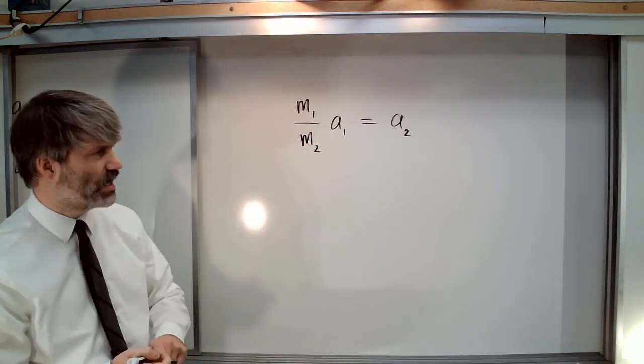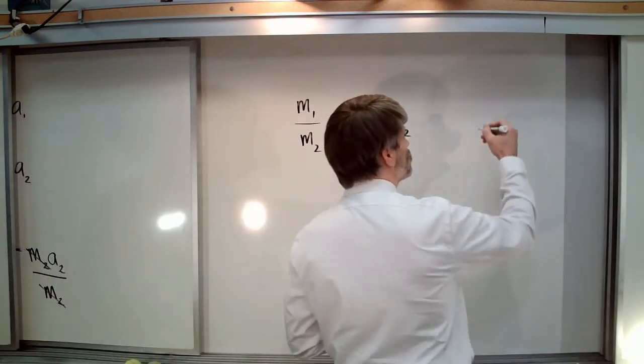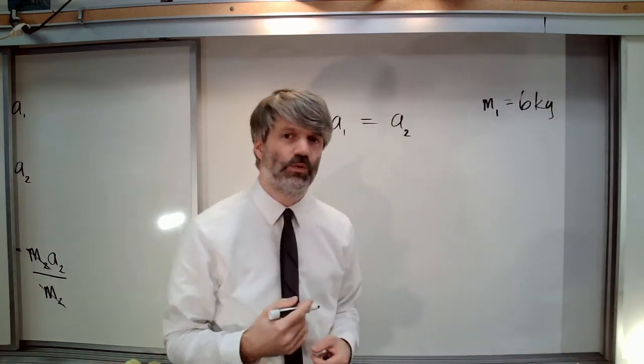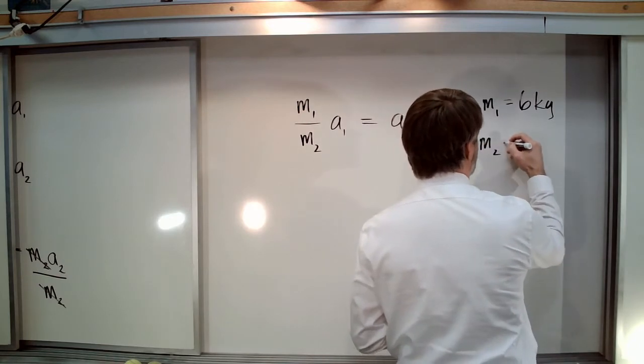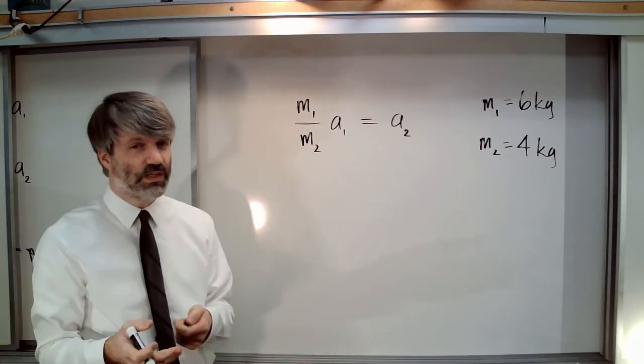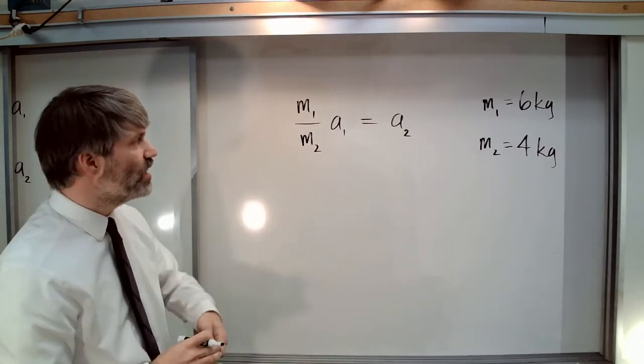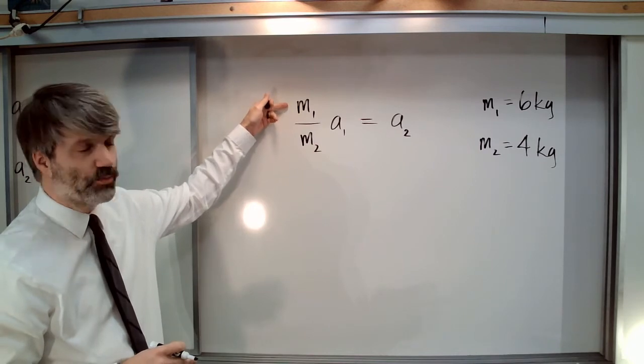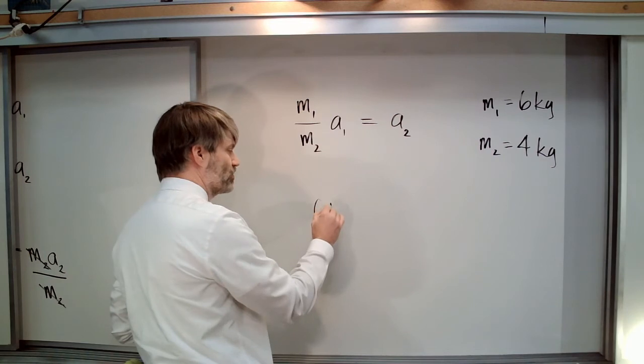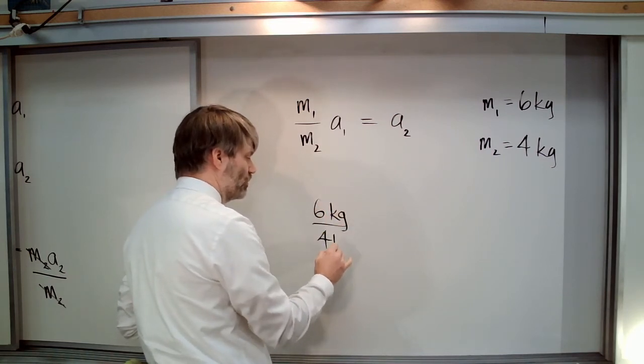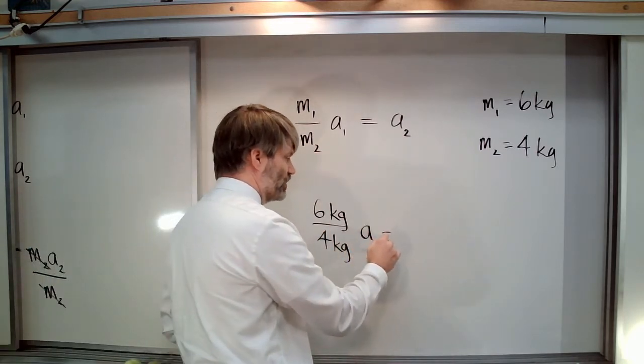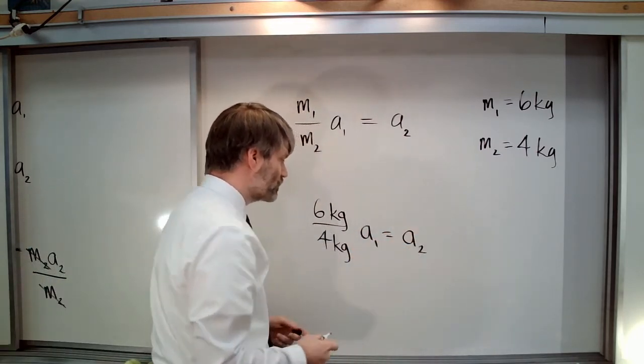For this problem, M1 was six kilograms and M2 was four kilograms. But again, it's the ratio of masses that matters. If we put those numbers in, we get six kilograms over four kilograms multiplied by that acceleration. What happens to the units? The units cancel.